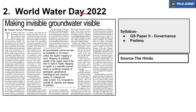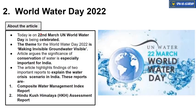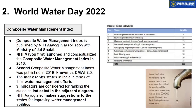The next article is about World Water Day 2022. This topic is important from GS Paper 2 Governance perspective. Today, 22nd March, is celebrated worldwide as United Nations World Water Day. The 2022 theme is 'Making Invisible Groundwater Visible.' This article discusses the significance of water conservation, especially for a country like India, and mentions two water-related reports. The first is the Composite Water Management Index, published by Niti Aayog in association with the Ministry of Jal Shakti — the first was published in 2018, and the second (CWMI 2.0) in 2019.